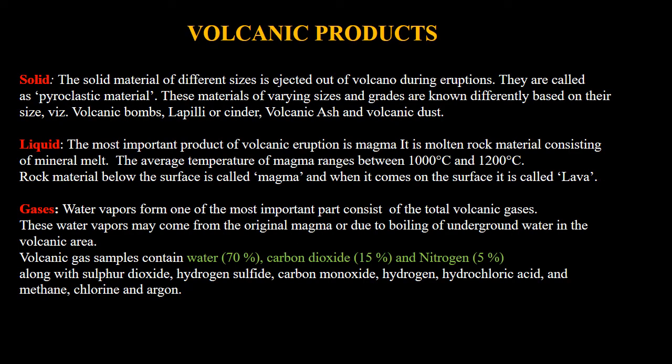There are three volcanic products: solid, liquid, and gas. Solid material of different sizes ejected from a volcano during eruption is called pyroclastic material. These materials of varying size and grades are known differently based on their size and shape — for example, volcanic bombs, lapilli, cinder, volcanic ash, and volcanic dust.